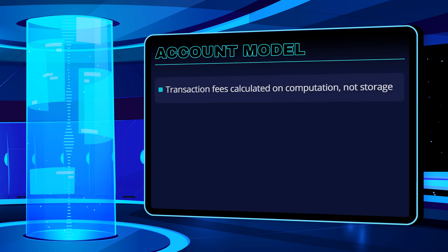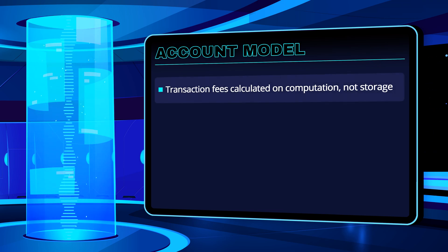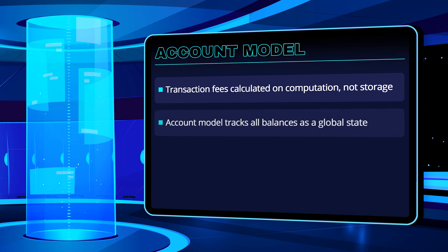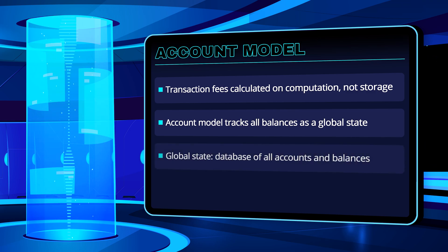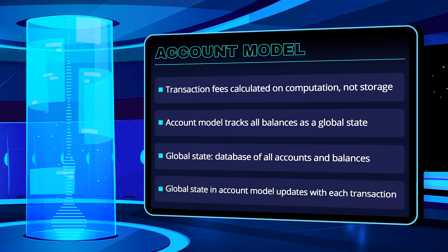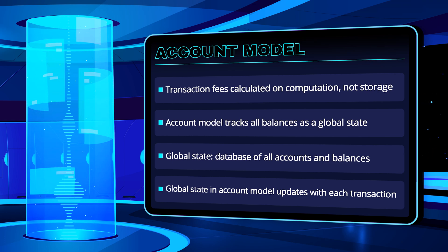Transaction fees are calculated based on the number of computations required to complete the state transition, rather than storage capacity. The account model keeps track of all balances as a global state, which is a database of all accounts and their current balances. The global state in the UTXO model is the set of all transaction outputs, whereas in the account model, the global state is updated and balances change.